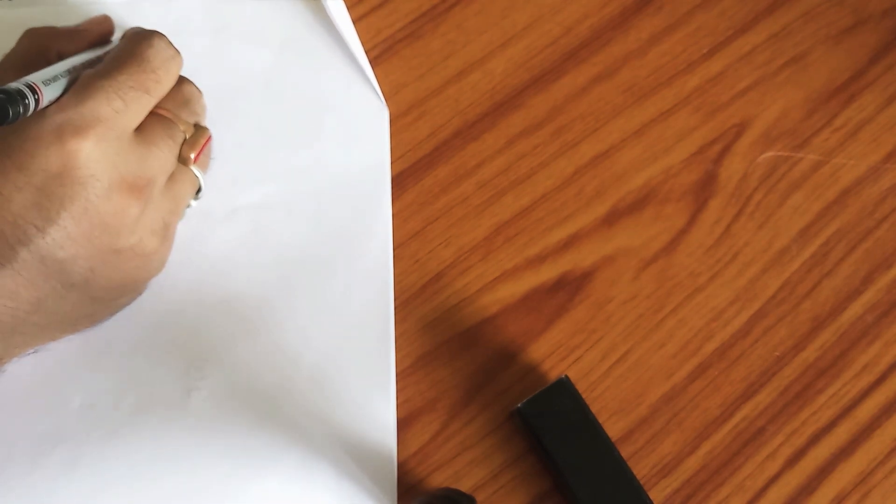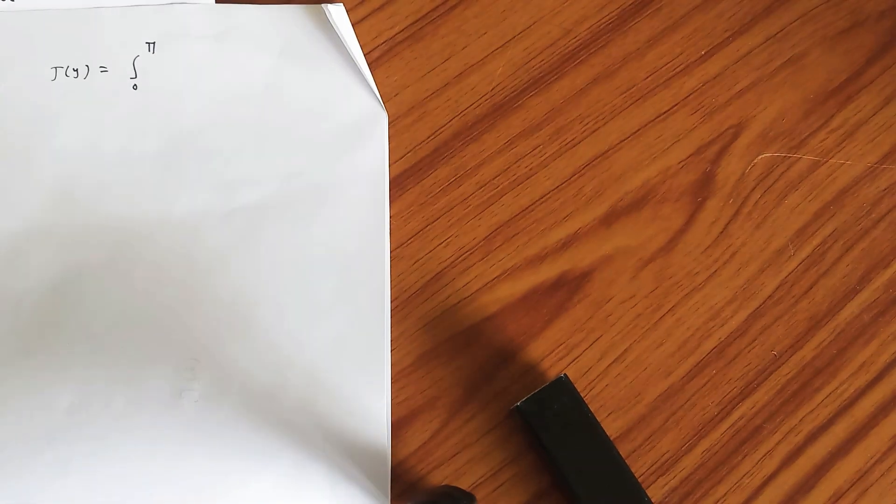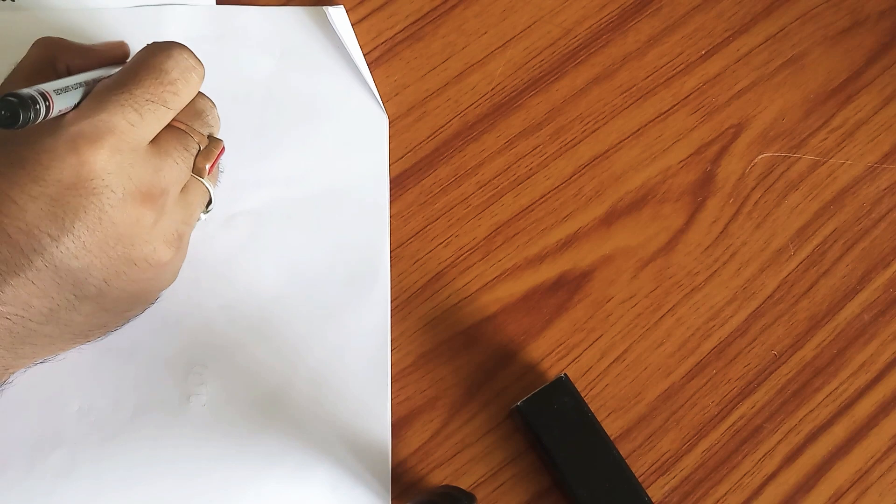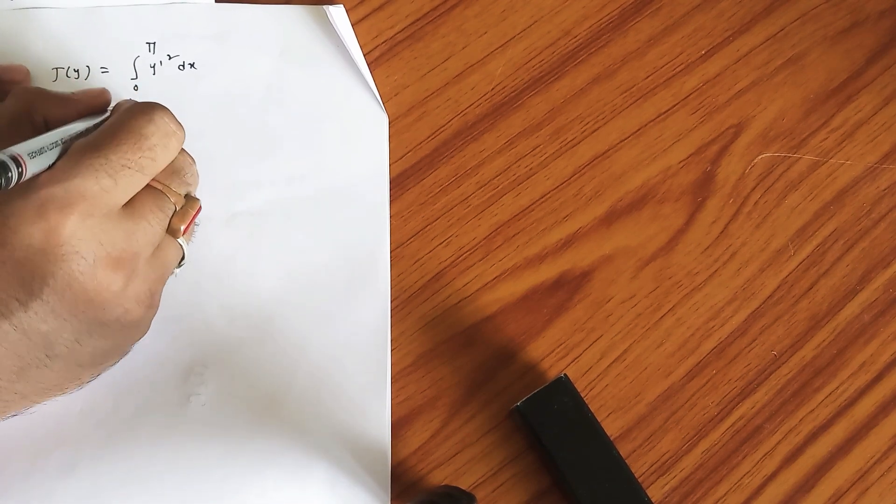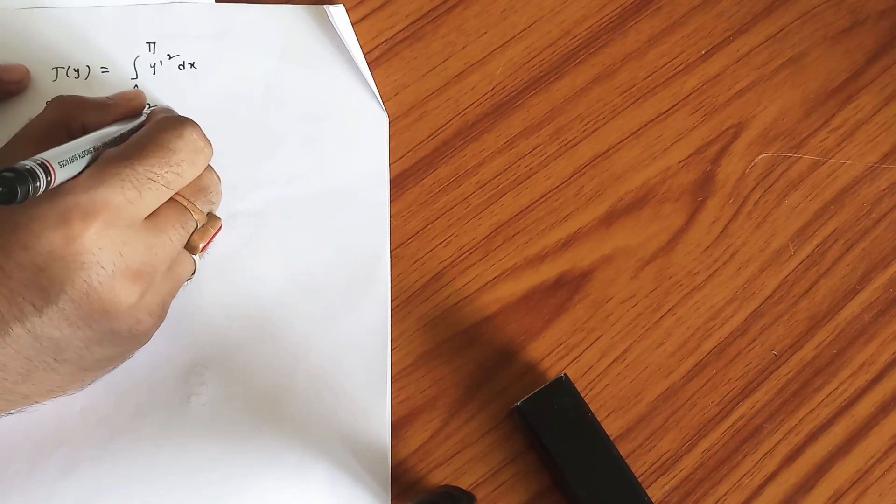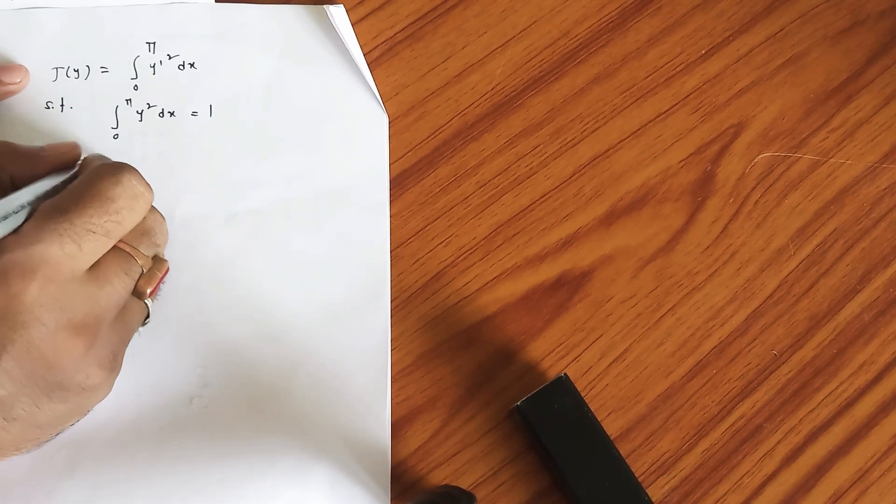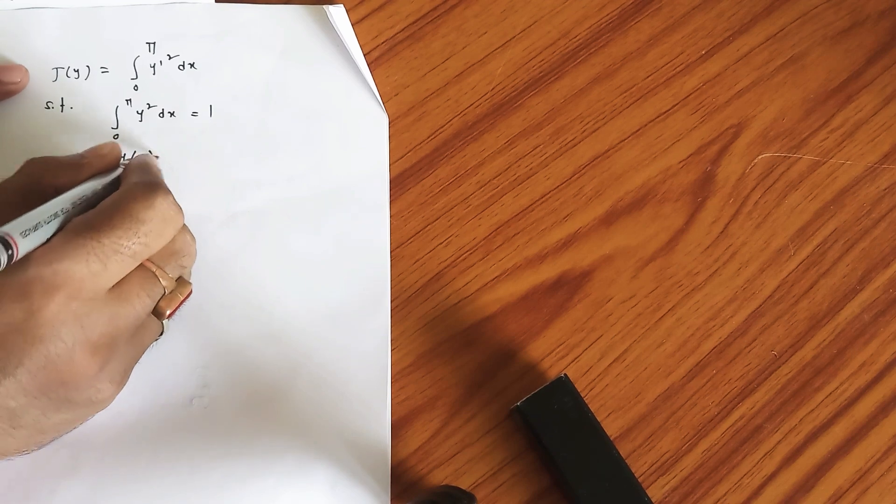You have all these stuffs. Look at J(y): it is ∫₀^π y' squared dx. We need to extremize this one subject to the integration ∫₀^π y² dx equals to 1, and two boundary conditions are also given: y(0) and y(π).